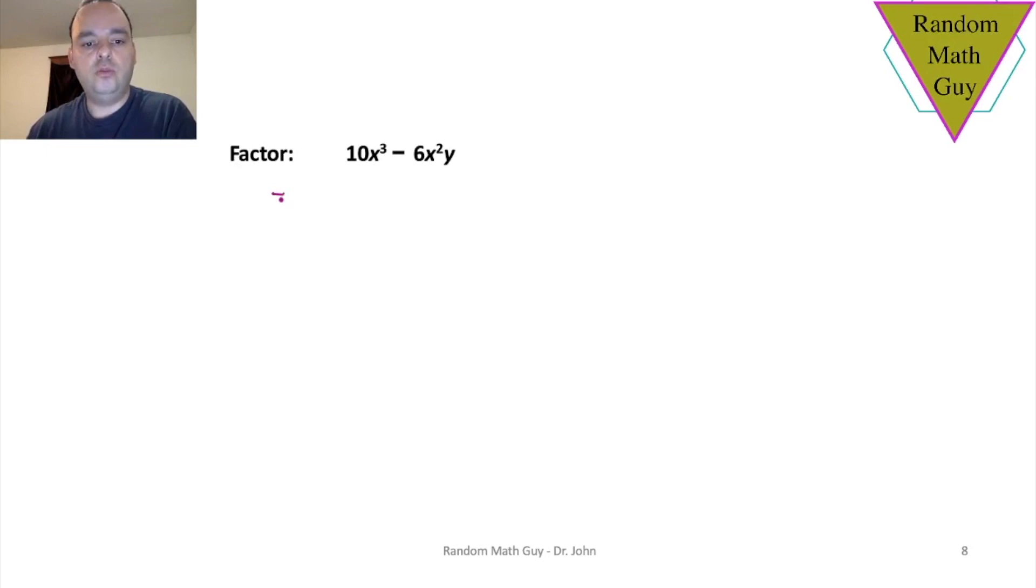So these two terms share both a 2 and an x, but not just an x, an x squared. Notice that the lowest power of x is 2 and that's what you're looking for. How about the y? Well they don't have, they don't both have a y. So that's why you don't have to worry about factoring out a y.